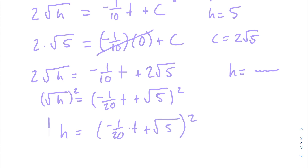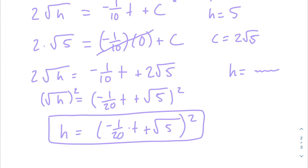That is our final answer for part c. We now have h expressed purely in terms of t with no constant of integration remaining. Hopefully that helps you with this AP Calculus problem. If you have any questions, feel free to leave them below, and I hope you have a great rest of your day.